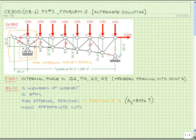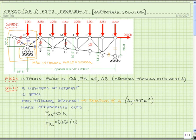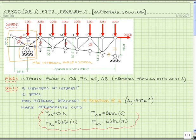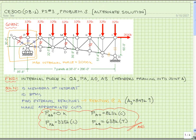To summarize: the force in member QA is zero — it is a zero force member. The force in member AP is 325 kips in compression. The force in member AO is 813 kips in compression. And the force in member AB is 638 kips in tension. That's the answer — an alternate solution to the one posted on Blackboard. I encourage you to look at both, and if you have any remaining questions about solving internal forces in trusses, please see your instructor. Thank you.